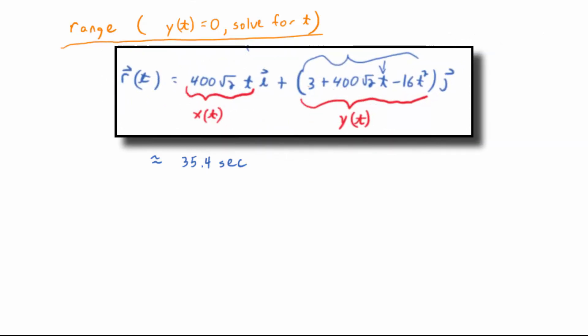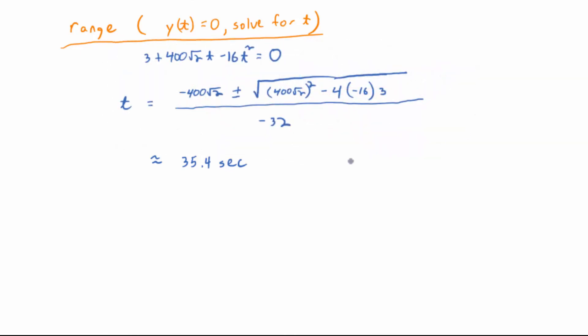So what are you going to do with the 35.4 seconds? Plug it in. To which one? X of t or Y of t? X of t, because we're looking for a horizontal distance traveled, right? So X of t is 400 root 2t. So we're going to take X of approximately 35.4 and introduce some round-off error there. 400 radical 2 times 35.4. What did you guys get?